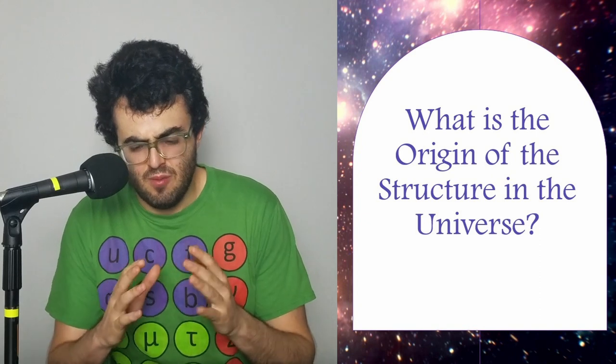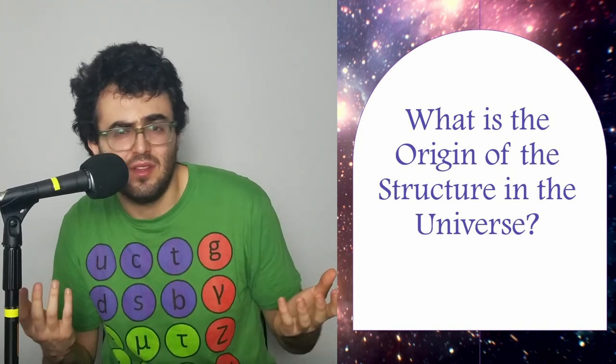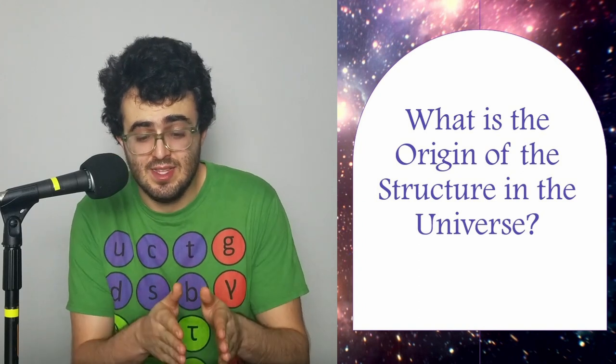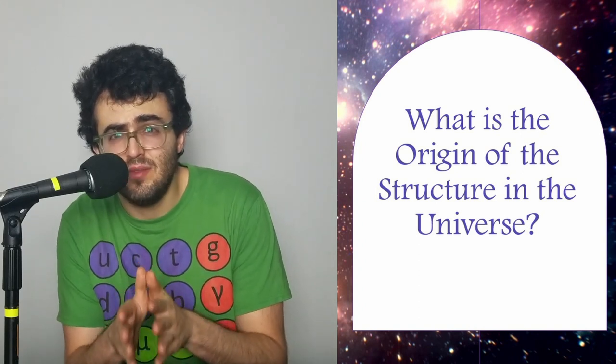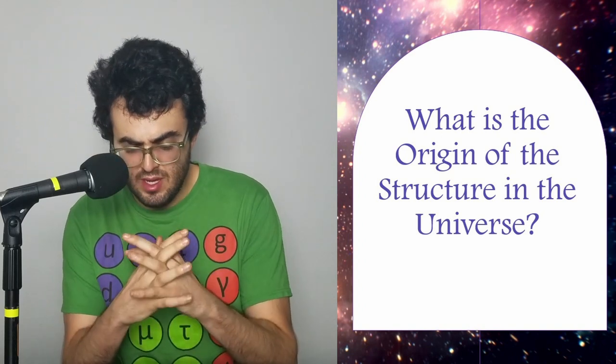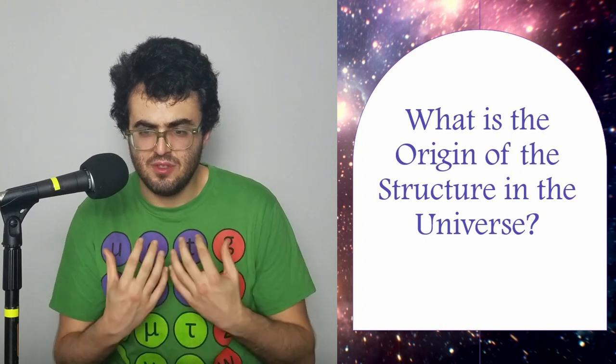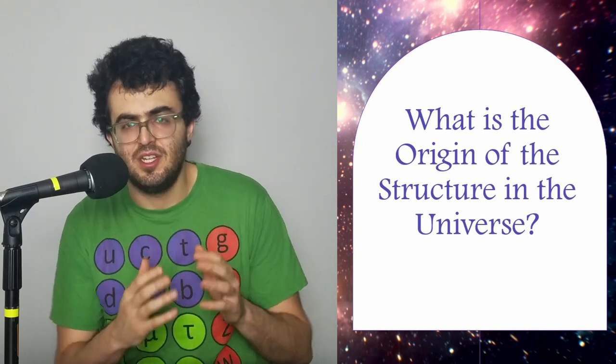In this video, we're going to wrap our mind around the origin of the structure of our universe. And in order to do that, we're first going to state the problem, why we would think that the universe would not have the structure that it has. Then we're going to have to understand quantum fluctuations. And once we understand quantum fluctuations, we're going to be able to combine quantum fluctuations with inflationary theory to understand how the structure of the universe got its initial stirrings.